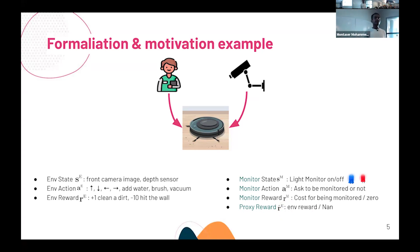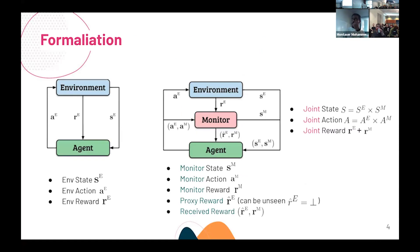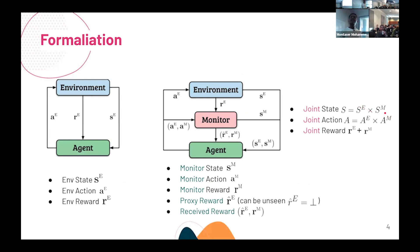Question: What does the agent see? Answer: The agent sees the proxy reward RE-hat (which could be undefined) and the monitoring reward RM. It also sees the joint state — the combination of the environment state and the monitoring state — and takes joint actions into both parts.